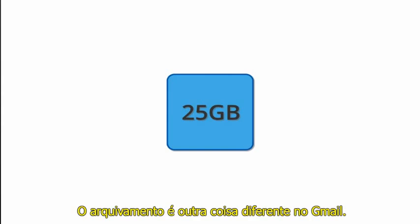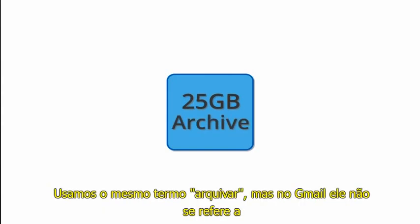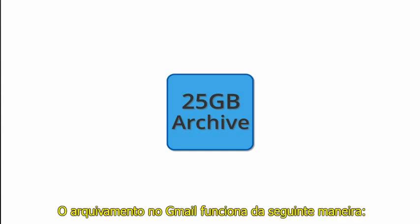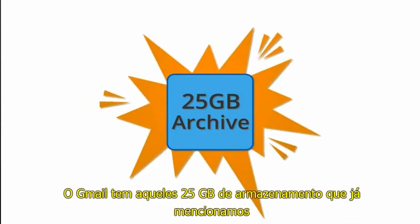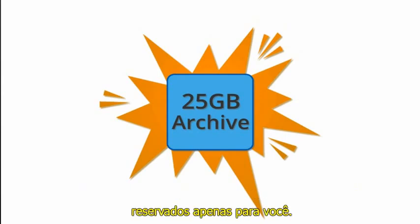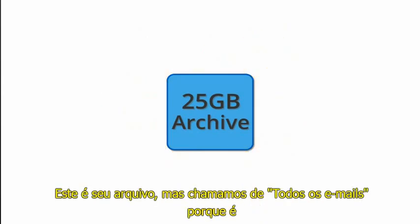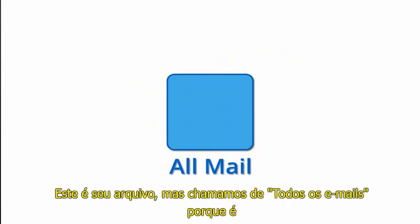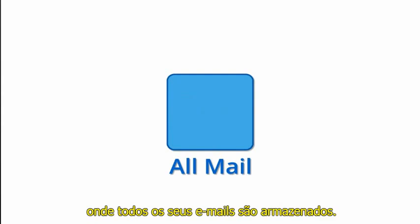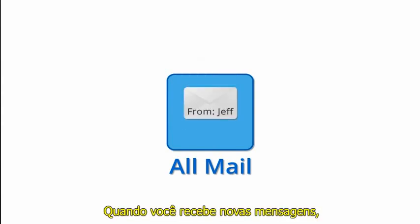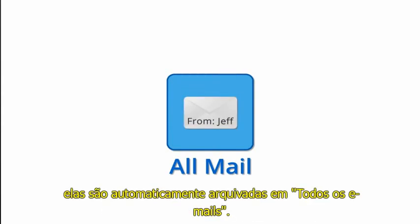Archiving is another thing Gmail handles differently. We use the same term archive, but in Gmail it doesn't refer to compressing and storing your mail. Gmail has that 25 gigabytes of storage reserved just for you — it's your archive, but we call it AllMail because it's where all your email is stored. When new messages arrive for you, they're automatically archived in your AllMail container.